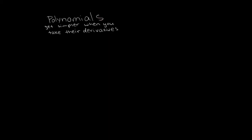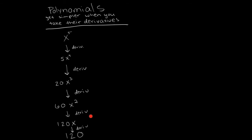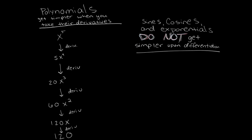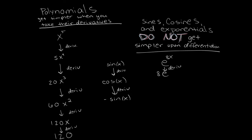Let's talk about how to make sure things will get easier when we use integration by parts. Polynomials, when you take their derivatives, get simpler and simpler — a fifth power decreases to a fourth power, then a cubic, and eventually to zero. Sines, cosines, and exponentials do not get simpler upon differentiation. Sine gives cosine, cosine gives negative sine — we're just going in circles. Exponentials give exponentials. These functions do not get simpler when you differentiate them.